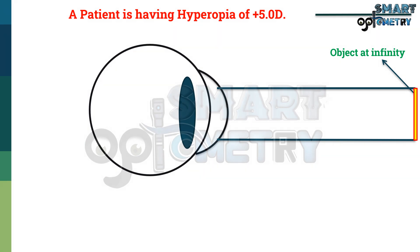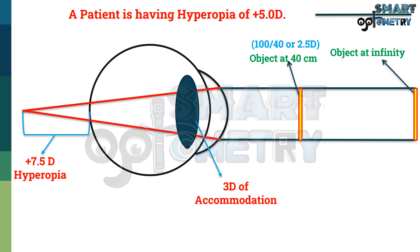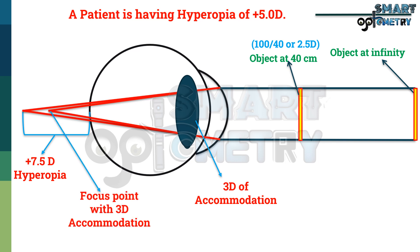Now, to see an object at 40 cm, a normal patient needs 100 divided by 40, or 2.5 diopters of accommodation. But as this patient has hyperopia of +5 diopters, they need 2.5 plus 5, or 7.5 diopters of accommodation to see at 40 cm. Since the patient can only induce 3 diopters, the rays shift somewhat closer to the retina but still focus behind it, so the patient sees blur at near equal to +4.5 diopters. This +4.5 diopter blur at near is more than the +2 diopter blur at distance.